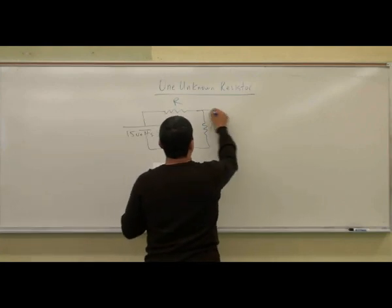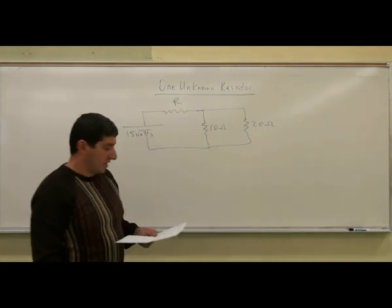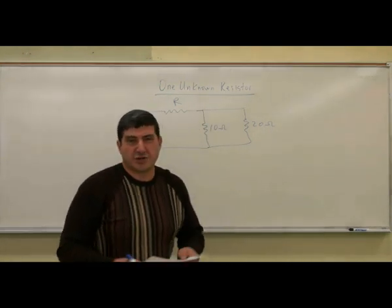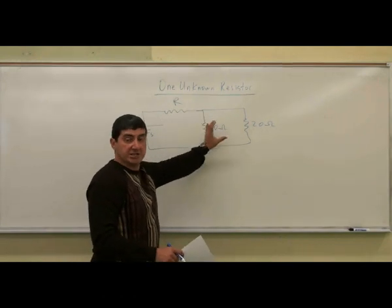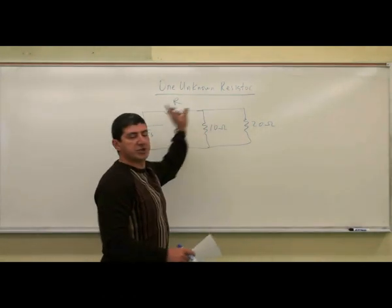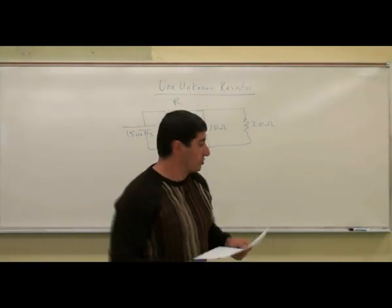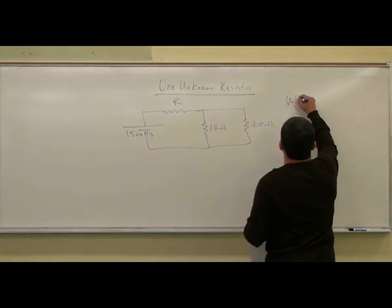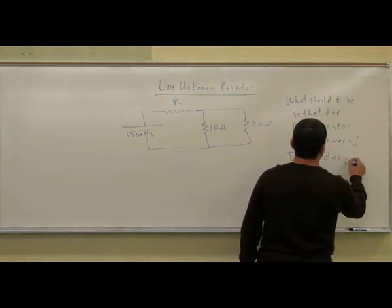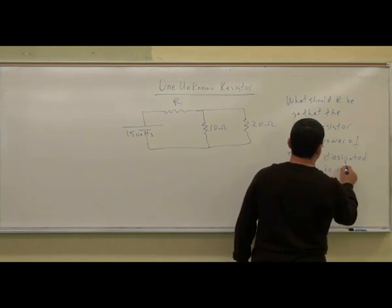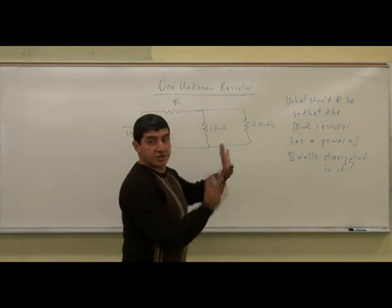10 ohms. 10 ohms, 20 ohms. And then this time we'll put, of course I could make the circuit a little different, but right now I'm trying to work with a similar looking circuit, but just switching things around, you know? So I can say, what should R be so that dissipated in it? Question mark.